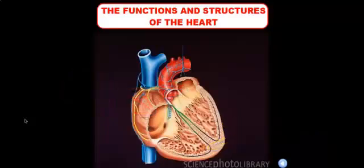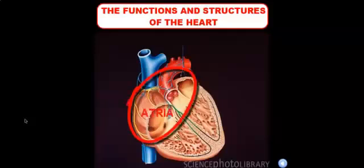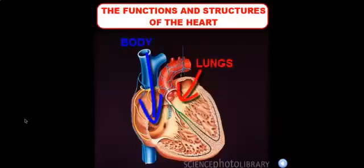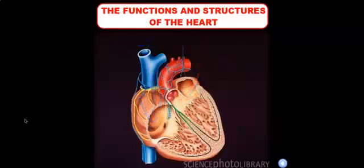Now the difference between the two is that the atria are located on the top of the heart. Since they're located on the top of the heart, they receive the blood from the body and from the lungs. So the right atrium receives blood from the body and the left atrium receives blood from the lungs. And when the atria contract, they force the blood down into the ventricles. So the right atrium pumps the blood into the right ventricle and the left atrium pumps the blood into the left ventricle.